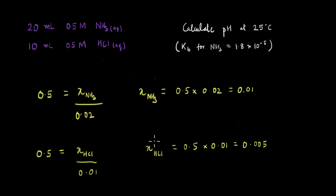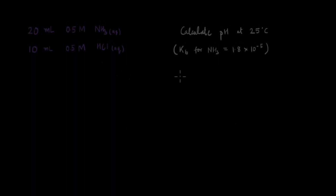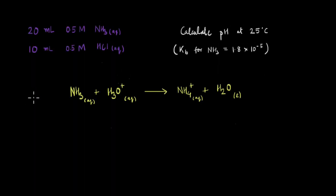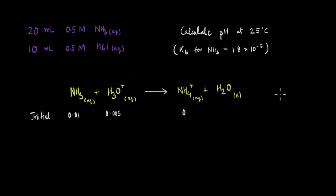Now let's write down the reaction and see how many moles of the reactants are consumed. The reaction is aqueous NH₃ reacting with H⁺ from the acid giving NH₄⁺. The H⁺ or H₃O⁺ is coming from the strong acid and reacting with the weak base. The initial number of moles are 0.01 for NH₃, 0.005 for H⁺ (H₃O⁺), and 0 for NH₄⁺ since no product has formed yet.